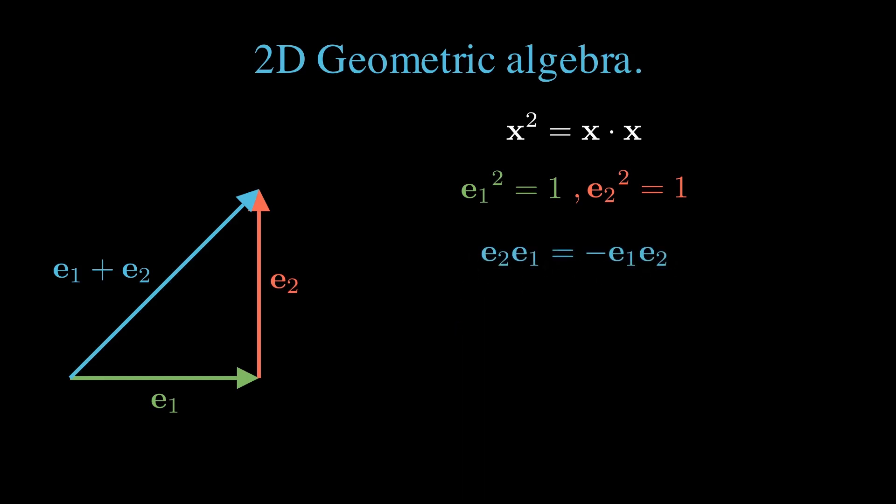In words, this means that the product of perpendicular unit vectors is anticommutative. Should we need to change the order of any two perpendicular unit vectors, we must also change the sign.